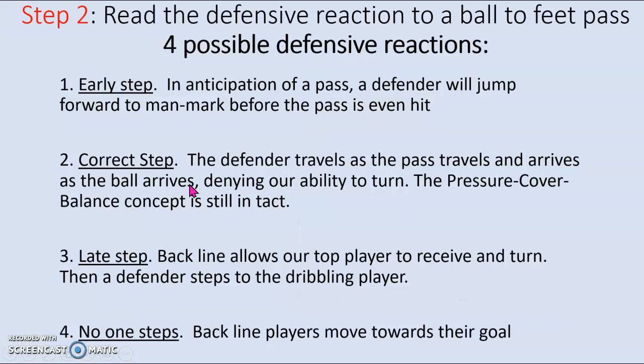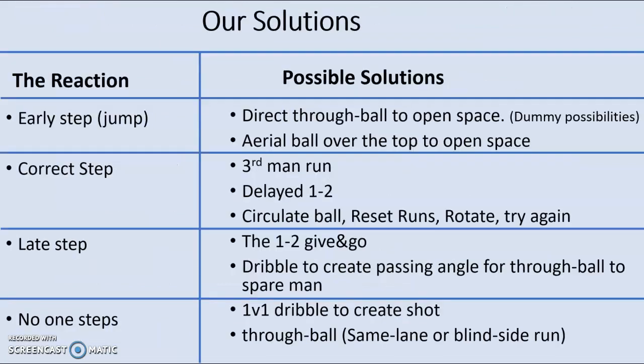When you get there, it's all about reading what the defense does. I broke it down into four situations. They're either going to step early and man-mark you before a pass, step at the correct time and deny your ability to turn, step late — meaning you already got to turn and you're on the dribble — or maybe they don't step at all. Early, correct, late, or no step — these are the four situations. In each one, you read what they're doing and then we have specific solutions.